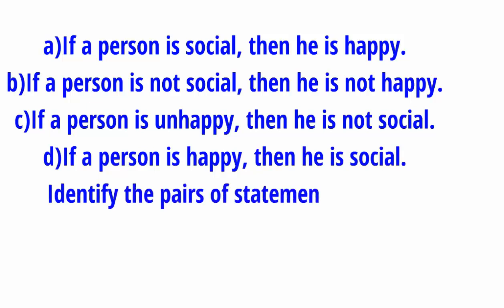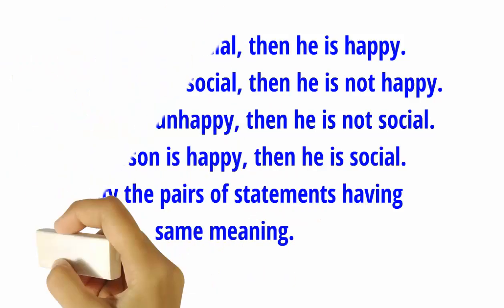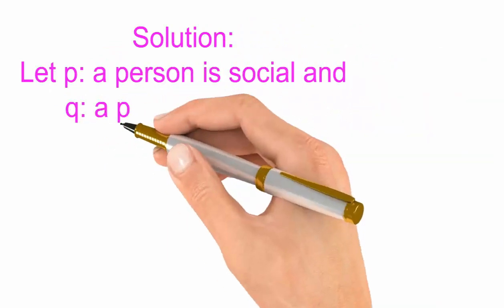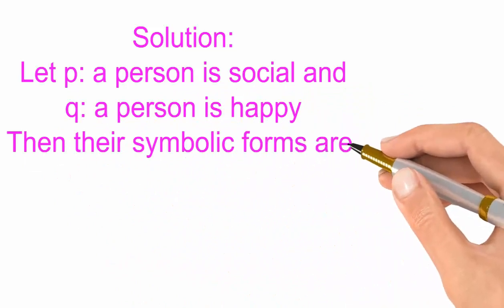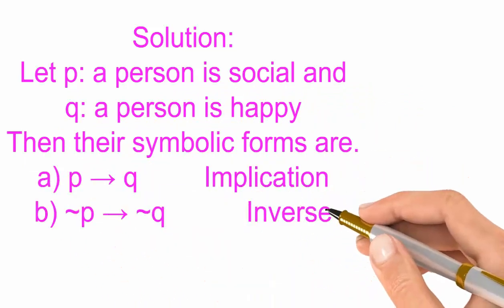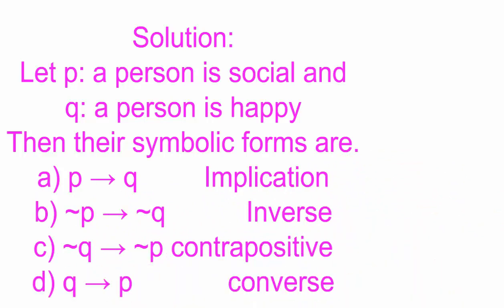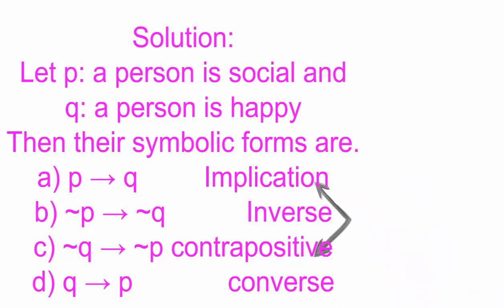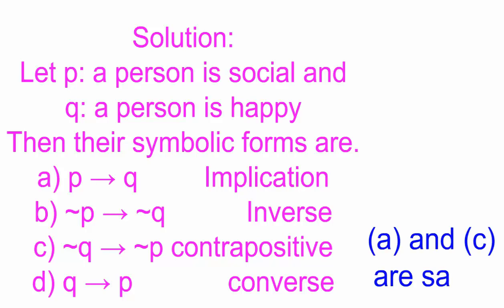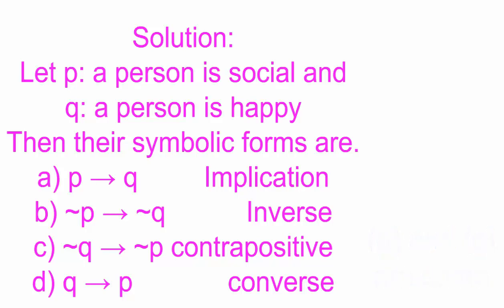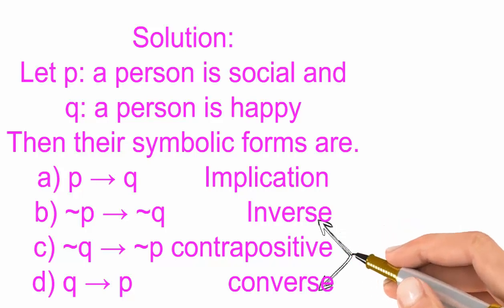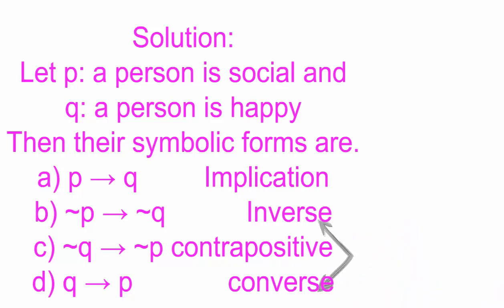Example: Identify the pair of statements having the same meaning. Solution: Let p denote 'a person is social' and q denote 'a person is happy.' Their symbolic forms are written accordingly. We know from the last video on converse, inverse and contrapositive that an implication and its contrapositive are logically equivalent, therefore A and C are the same. Also, inverse and converse are the same, therefore B and D are the same.